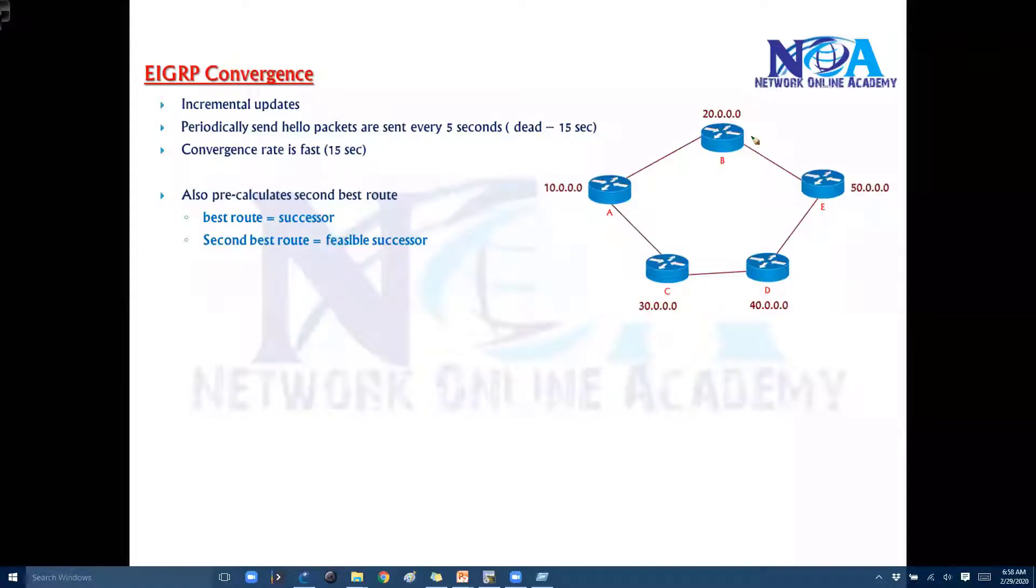Now in a similar way we'll see something called convergence. Convergence is nothing but how much time EIGRP or any protocol is going to take if your best route fails.